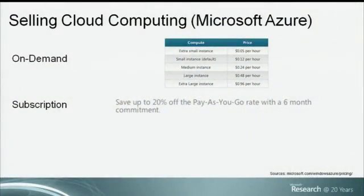Suppose you're a customer and you want to buy some cloud computing. You go to the Microsoft Azure website, and you find two options. Option one: you can buy on-demand, paying per hour to run an instance. Option two: you buy a subscription, which gives you 20% off the on-demand price, but you're committing to buy at least a certain quantity over six months.